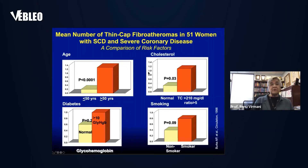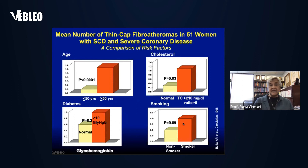The same applies to women with severe coronary atherosclerosis. Older women have more ruptures than erosions. If glycohemoglobin is greater than 10, there are more ruptures. Higher total cholesterol is also associated with more ruptures. And if you are a smoker, you will see much more thrombosis.